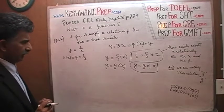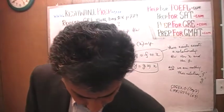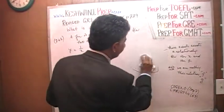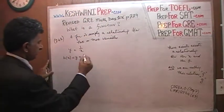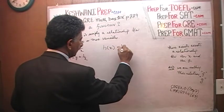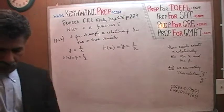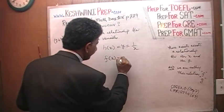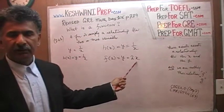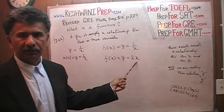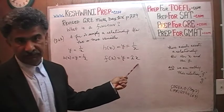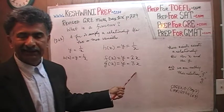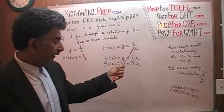That's the third relationship: h of x equals 1 over x. Now, for the first relationship f(x)=2x and the second g(x)=3x, x can have any values — positive, negative, zero, fractions, decimals, whatever. But that is not the case for h(x) = 1/x. Here there is a limitation: x can have any value it wants, except it cannot be zero.